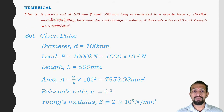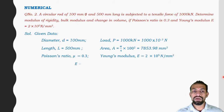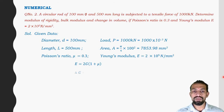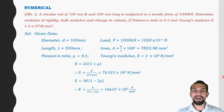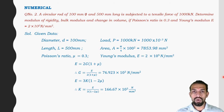Given data: diameter = 100 mm, load = 1000 × 10³ N, length L = 500 mm, area = π/4 × 100². Using E = 2G(1 + μ), G = 76,923 × 10³ N/mm². Using K = E / [3(1 − 2μ)], K = 166.67 × 10³ N/mm².